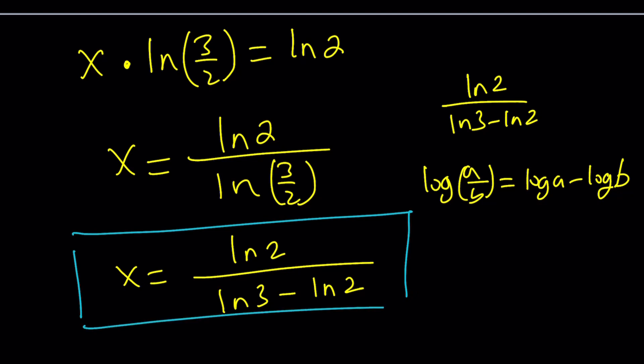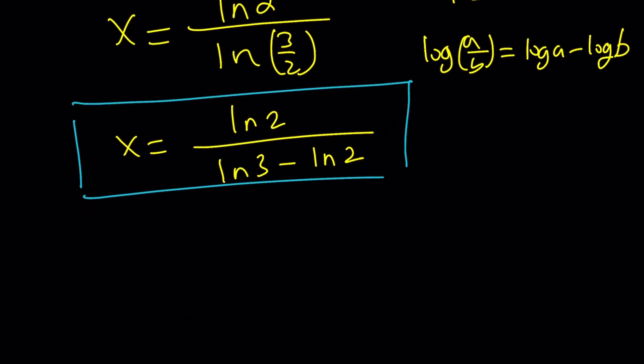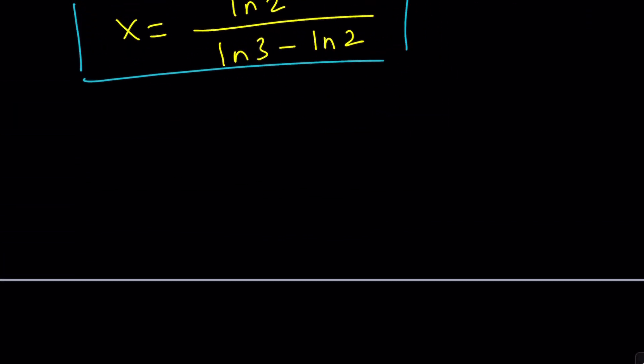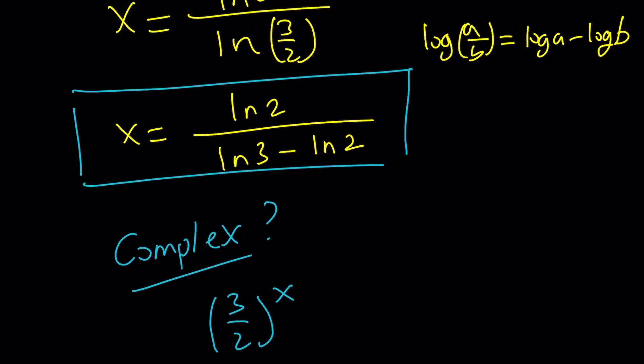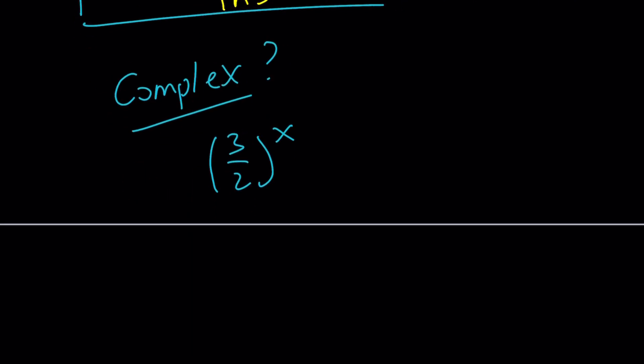What did we get with the first method? We got ln 2 / (ln 3 - ln 2), right? Are they different? No, not really. If you use the quotient property, remember log(a/b) can be written as log a - log b. And this is true for any base, including base 10, including base e. So, we can also write this as ln 2 / (ln 3 - ln 2). So, our answers agree on the same thing. Make sense? Now, let's go ahead and talk about how to complexify this.